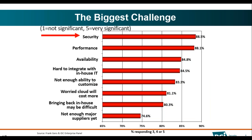The number one reason companies shift to the cloud is performance or availability, but the number one challenge is security. According to an IDC research survey, 88.5% of people are more concerned about security than performance or availability when moving to the cloud. You would have thought availability would be the top concern, but it is security — and there is a reason for that.